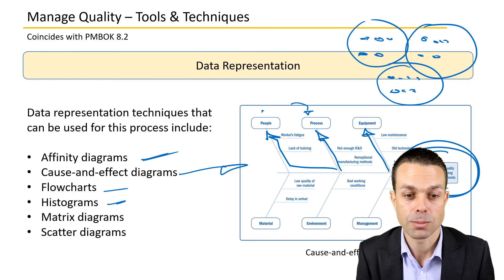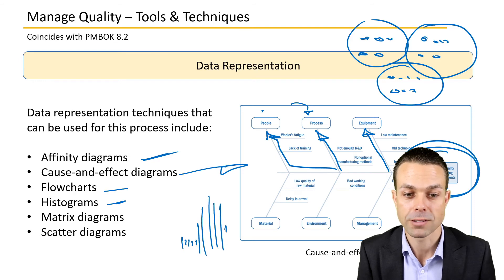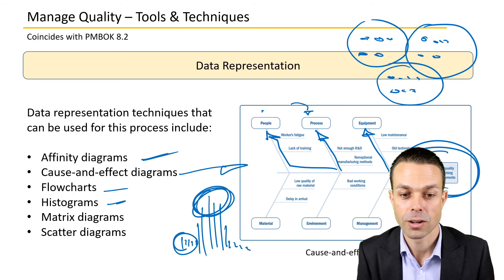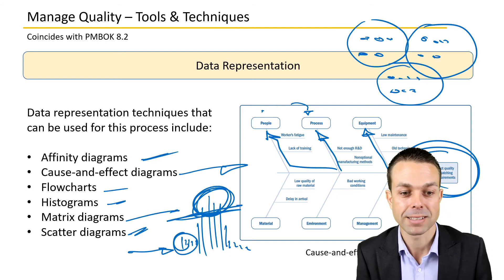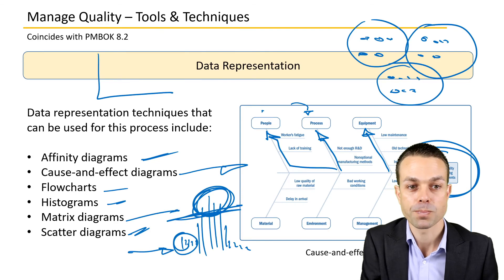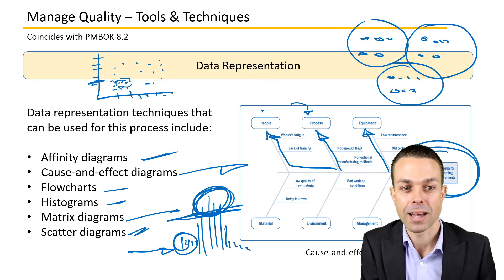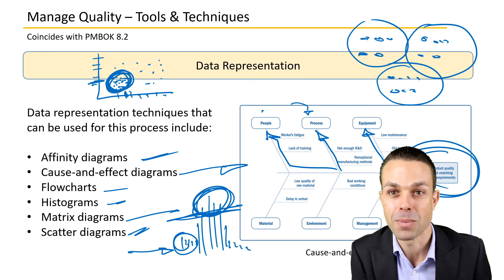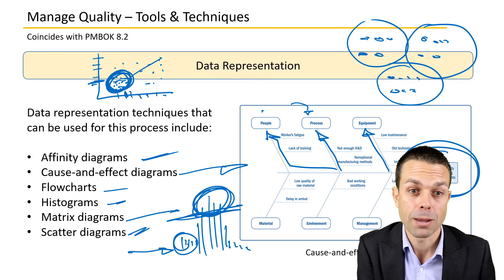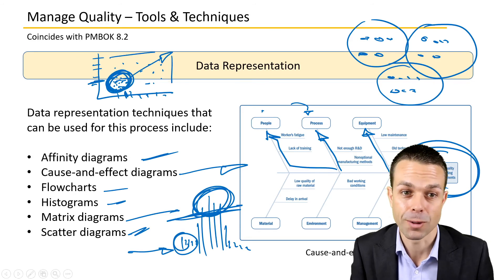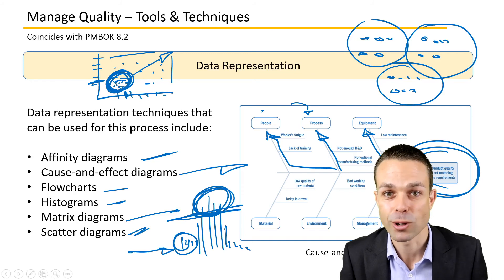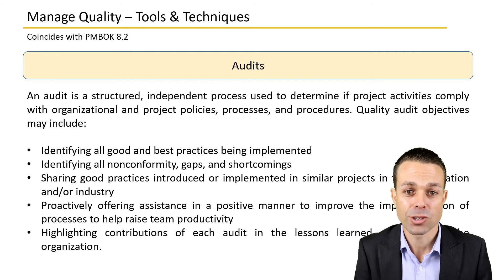Other data representation tools include flowcharts of the process, and histograms for measuring — for example, a lot of defects might be happening in one particular area but not others. Matrix diagrams and scatter plots are also used: on a scatter plot with an X and Y axis, dots represent measures, and clusters of dots indicate where the bulk of measurements fall, which can be good or bad depending on what you're measuring.